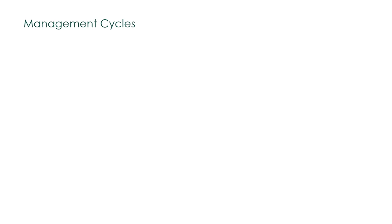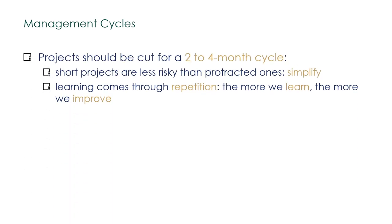Let's look at management cycles. Projects should be scoped for a 2 to 4 month cycle, because short projects are less risky than protracted ones.